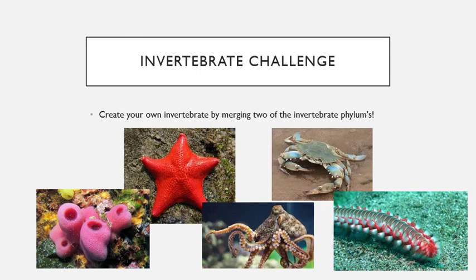Now that you know everything about invertebrates, I want you to create your own invertebrate. Merge two different invertebrate phylums into one — you can choose an animal or characteristics of that phylum, put them all together, and try to make a really cool new marine species. That's your challenge for this week — make sure you post it to the Flipgrid. Good luck, scientists! I can't wait to see it!